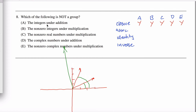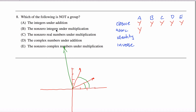Associativity: addition and multiplication are both associative whether you're dealing with integers, real numbers, complex numbers, or anything else. So integers under addition — yes. Non-zero integers under multiplication — yes. Non-zero real numbers under multiplication — yes. Complex numbers under addition — yes. Non-zero complex numbers under multiplication — yes. You could verify that A×(B×C) = (A×B)×C in each case, but it's fairly obvious, so we'll say yes for all.